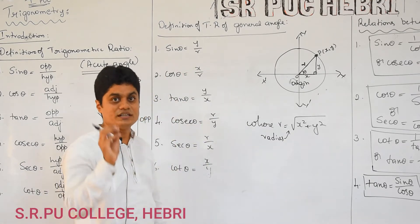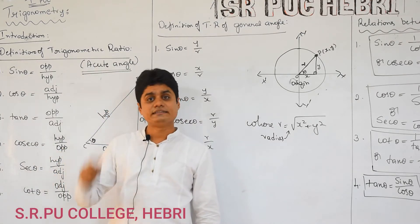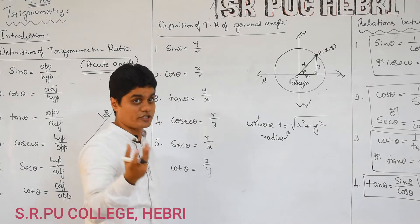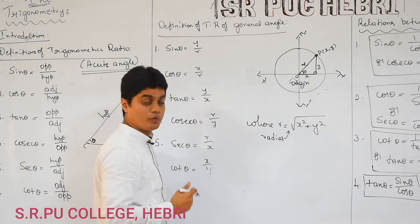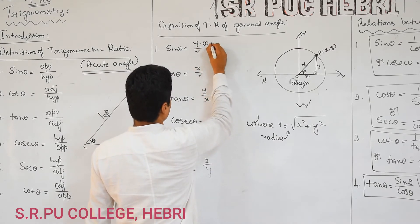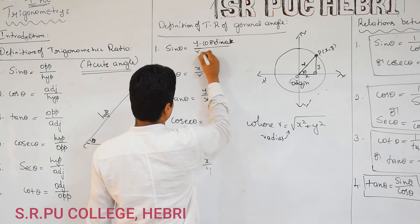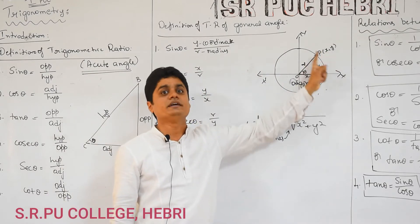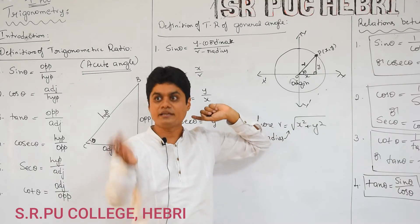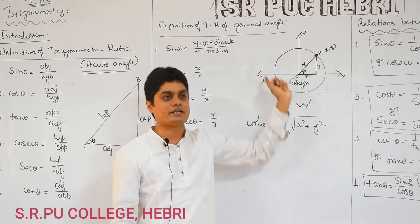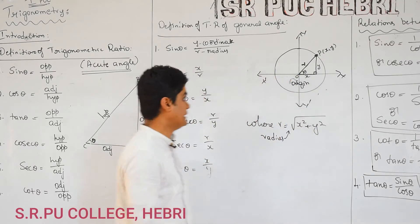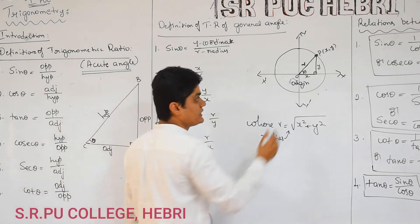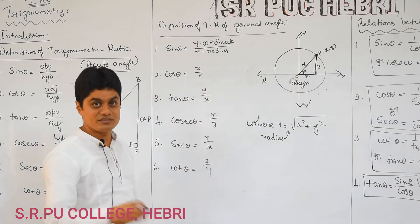Now I am going to define the first trigonometric function, sin theta. This is the geometrical definition of trigonometric ratios. Sin theta equals Y coordinate divided by radius. The point P(x, y) may come in any quadrant — maybe more than 90 degrees, more than 180 degrees, more than 270 degrees — so Y coordinate can be anywhere in this plane. Therefore in general, sin theta is Y over R. Compare this to the previous definition — opposite by hypotenuse — here Y is the opposite side and R is the hypotenuse. Similarly, cos theta is defined as X coordinate by radius.